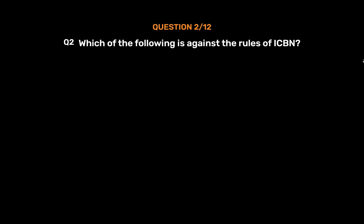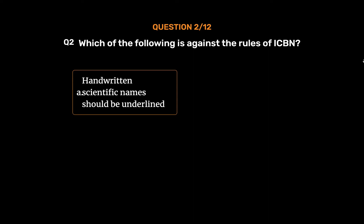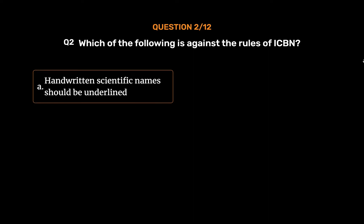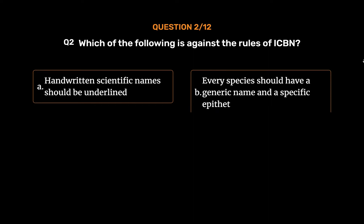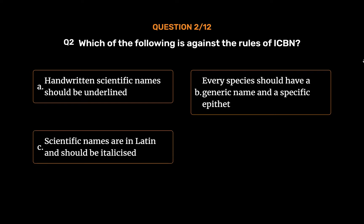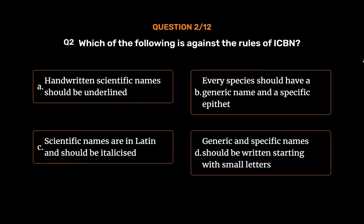Question No. 2. Which of the following is against the rules of ICBN? Option A: Handwritten scientific names should be underlined. Option B: Every species should have a generic name and a specific epithet. Option C: Scientific names are in Latin and should be italicized. Option D: Generic and specific names should be written starting with small letters.